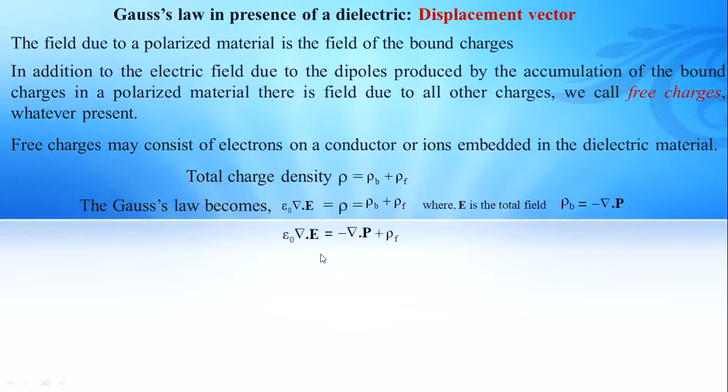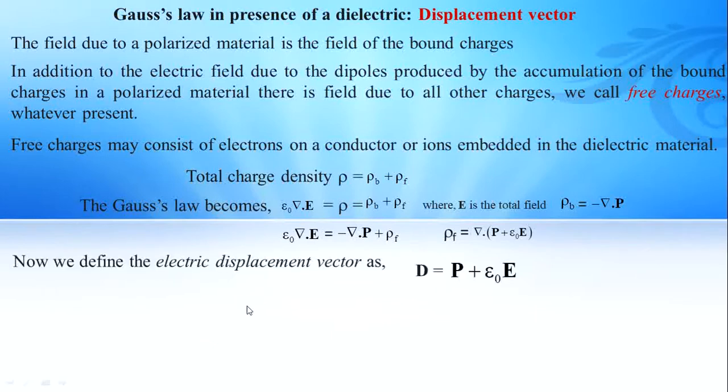We can substitute this equation. Epsilon_0 del dot E is equal to minus del dot P plus rho_f. Now by rearrangement, rho_f is equal to del dot (P plus epsilon_0 E). We can substitute capital D equals P plus epsilon_0 E. D is the electric displacement.